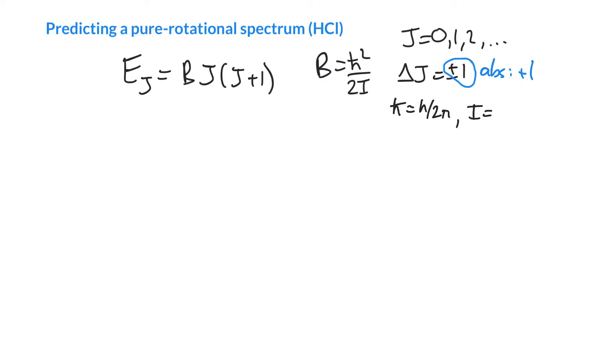The moment of inertia is the effective or reduced mass times r squared. The effective mass for a diatomic is the product of the masses over the sum of the masses. And r is the distance between the two atoms, so for a diatomic molecule there's just a single distance to worry about.